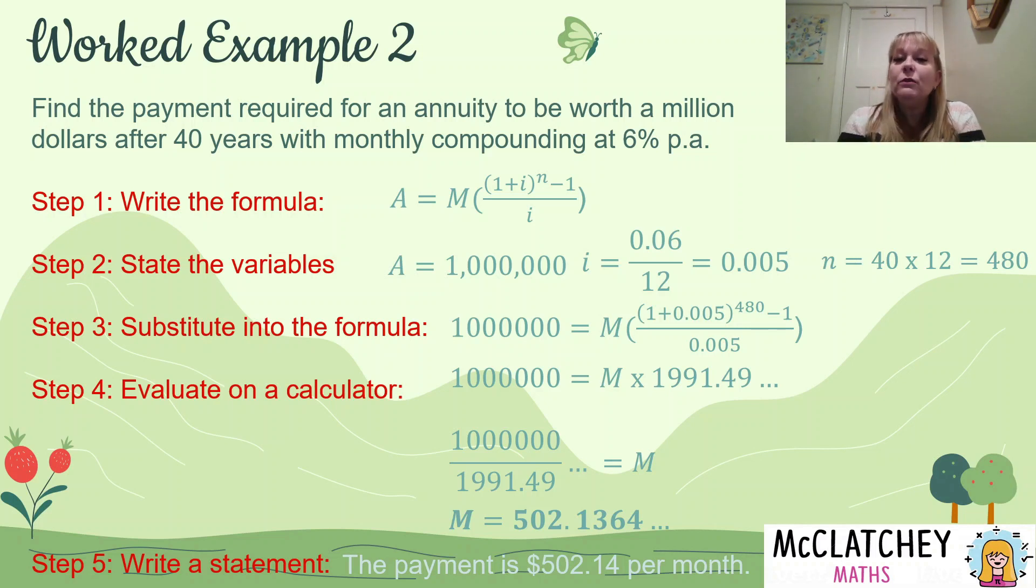Now, because you'll notice that i is on the numerator and the denominator, you will not be asked to find the interest rate. That is far more complex than general mathematics or maths applications requires. If you are in Queensland in Australia, your calculator will not find that for you. So you will not be asked to find i. In terms of finding N, it's a very difficult thing without using logarithms to find powers. And you're not required to use logarithms in most of the general maths courses across Australia.